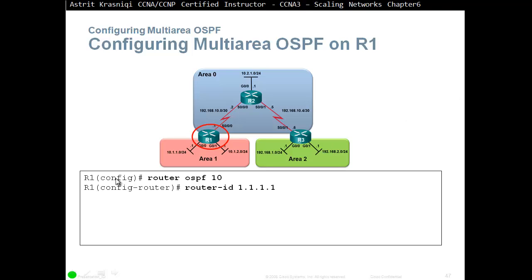That becomes process 10. This process number does not have to match other neighbors — other neighbors can have a different process. We usually keep it the same, but it doesn't have to match, which is different from EIGRP where it does have to match. In OSPF it's very important that we define a router ID — without a router ID we cannot implement OSPF. This is the most preferred method: to explicitly define what the router ID is.